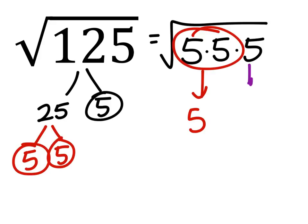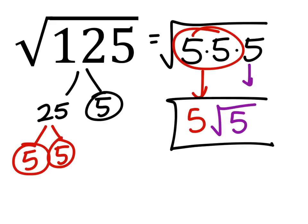So that takes this pair out of the square root. This 5 radical is still in the square root, so we have 5 times the square root of 5. Oh, that looks much better.